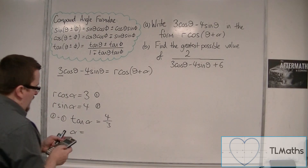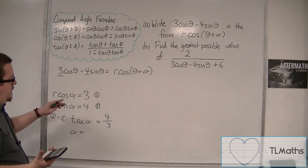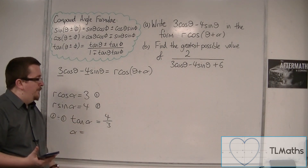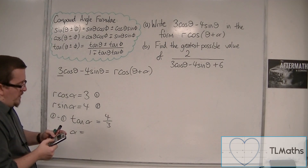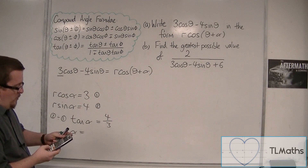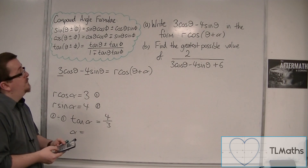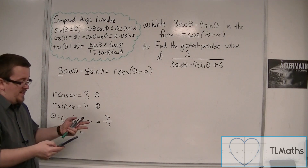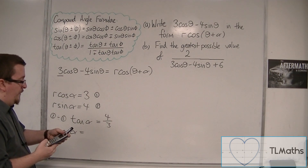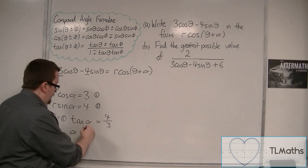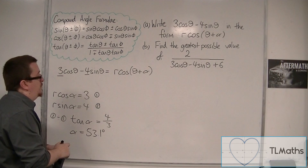Inverse tan both sides. As I said in the previous video, the value of α is generally acute. I'm going to do this one in degrees — the problem will be set up to be either in radians or degrees. I'm going with degrees since I did radians in the last example. So inverse tan of 4/3 is 53.1 degrees, to one decimal place.